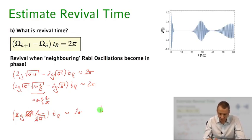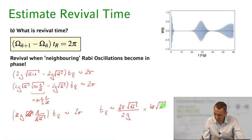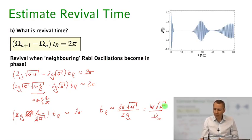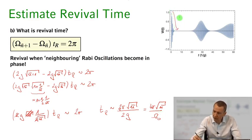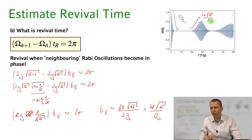The revival time is essentially 2pi·√n-bar divided by g, or equivalently 4pi·√n-bar divided by the vacuum Rabi frequency omega_0. Notice that the revival time explicitly depends on the average occupation number n-bar, whereas the collapse time did not — t_C was simply pi over omega_0. The revival timescale depends on the square root of the mean photon number and the vacuum Rabi frequency.